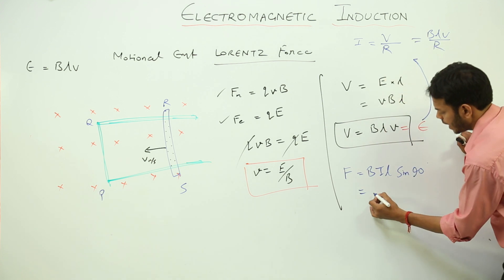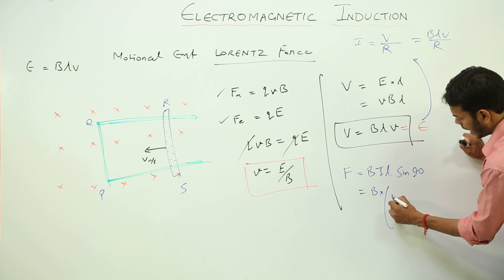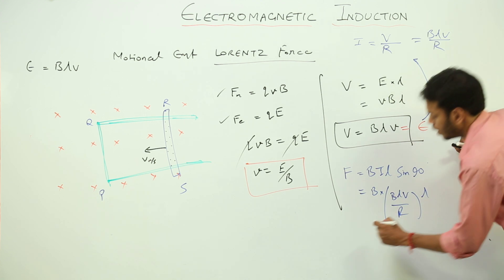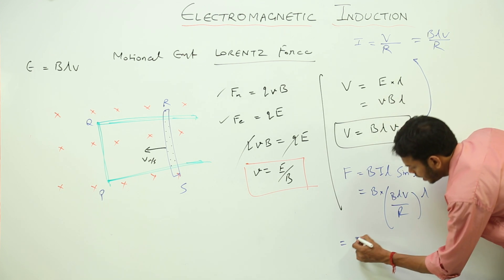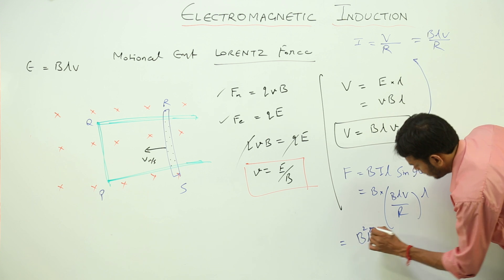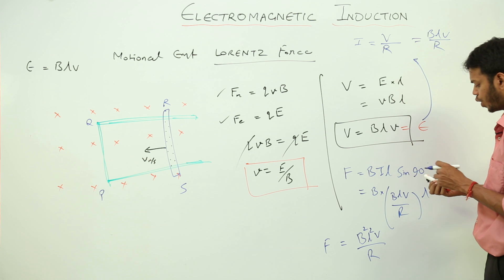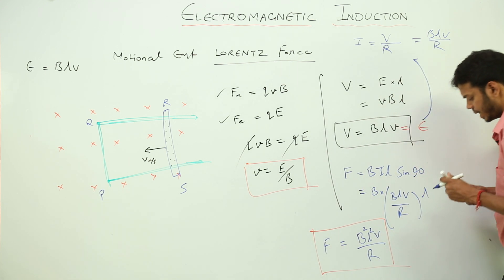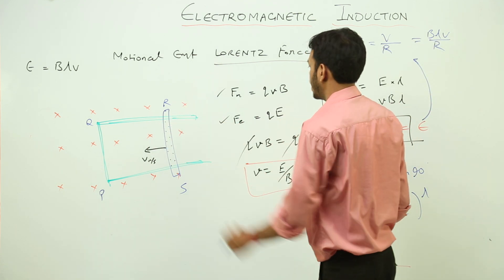This is the value of I. So B into, instead of I, I am writing BLV upon R into L. So the force is B square, L square, V over R. This is the expression for force experienced by the conductor which is producing the induced EMF or force experienced by this movable arm.